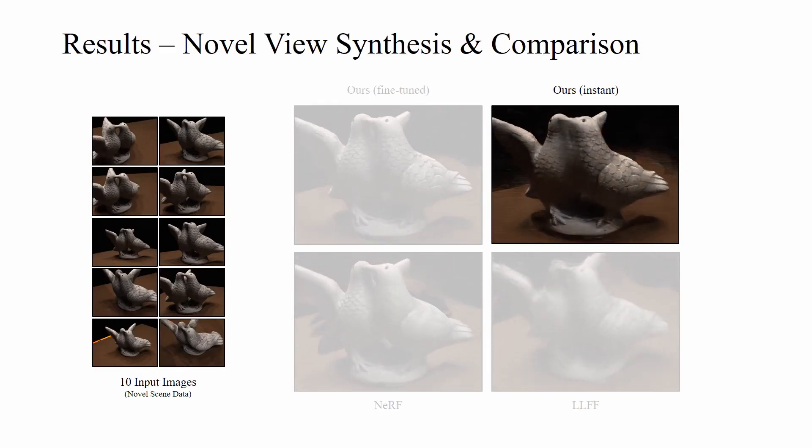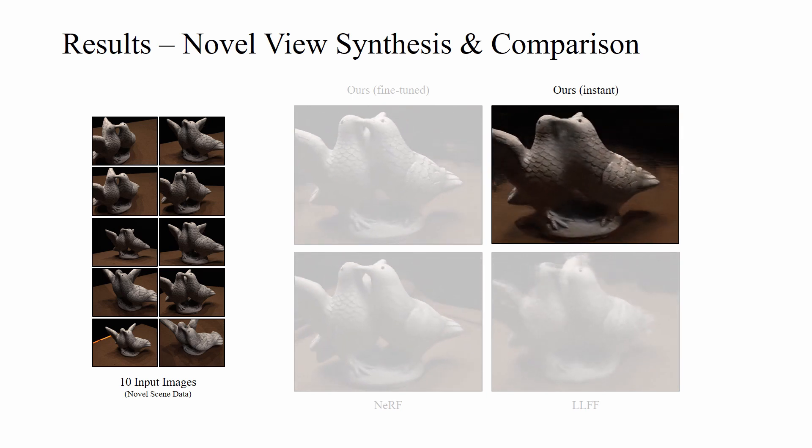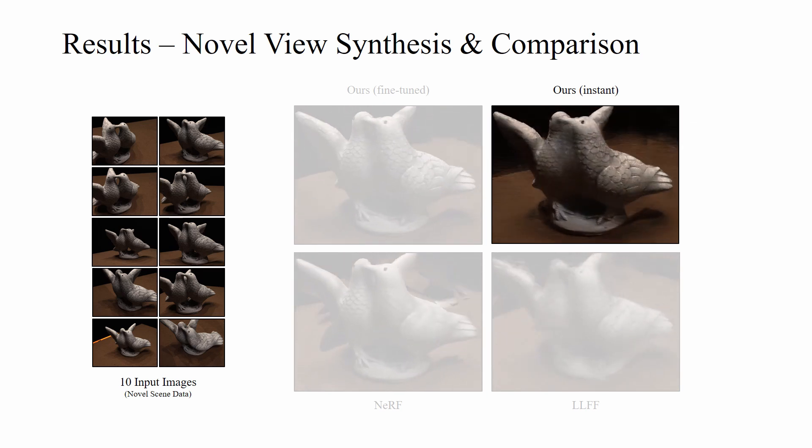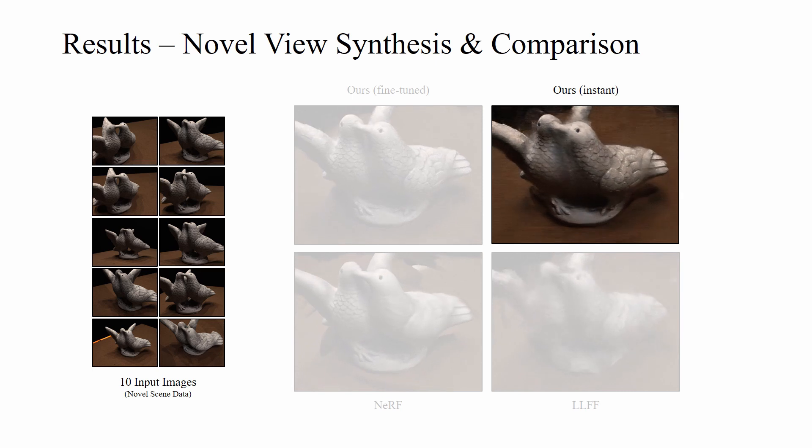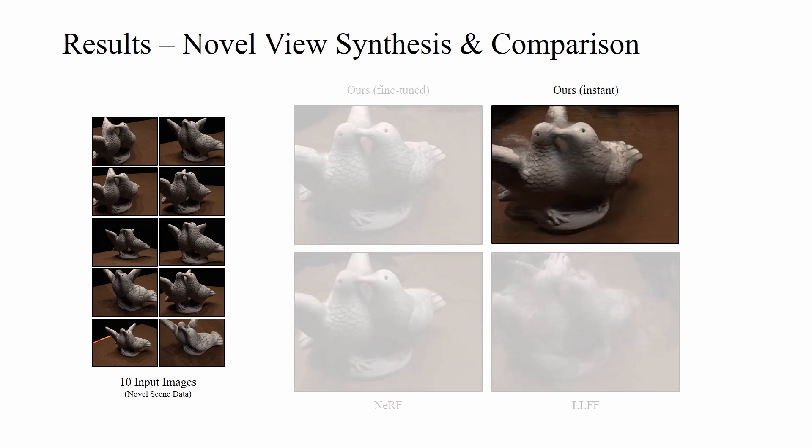Let's look at our results. We train our method on roughly 100 objects from the DTU dataset and we test it on a novel object at inference time. Stereo Radiance Fields obtain sharp novel views in a single forward pass of the network.